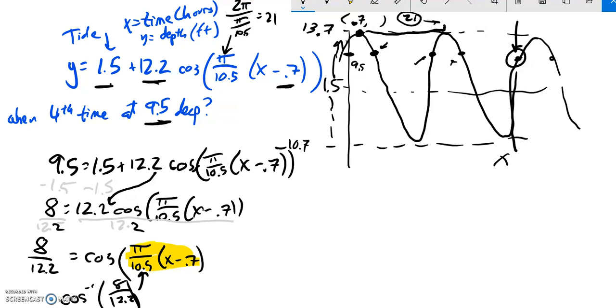Let me do that on my calculator. Inverse cosine of 8 over 12.2, and it spits out 0.8556. Now remember, that's in radians, right? So that's an angle measure in radians. One radian is about 57 degrees or so, so hopefully that helps give it a little context.